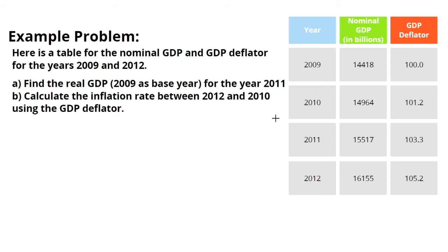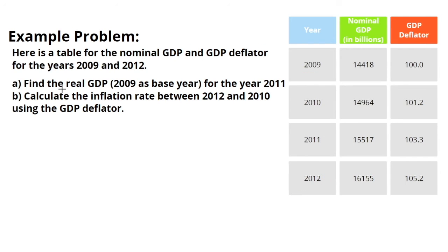Let's learn even more about the GDP deflator through an example problem. Here's a table for nominal GDP in billions and the GDP deflator for the years 2009 to 2012. For part A, we have to find real GDP using 2009 as the base year for the year 2011.